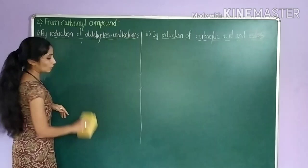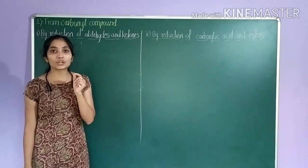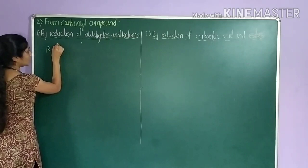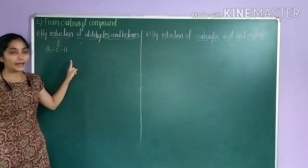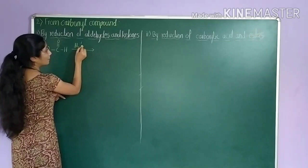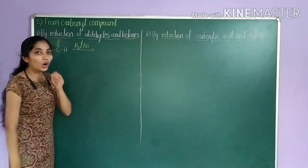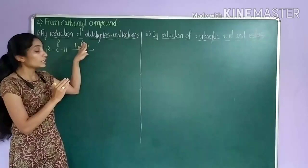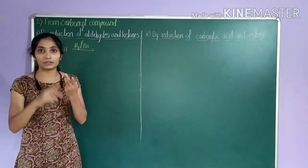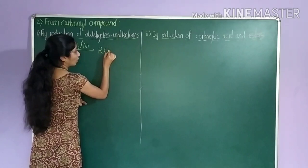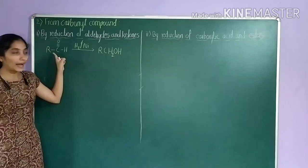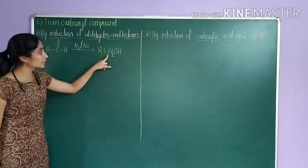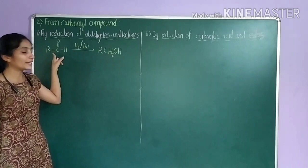Preparation of alcohols by reduction of aldehydes or ketones. Let us take a general example for aldehyde: R–C(=O)–H. If you treat aldehyde with H2 in presence of finely divided platinum, palladium, or nickel catalyst, you get the corresponding primary alcohol, RCH2OH. This method of preparation of alcohol from aldehyde is called catalytic hydrogenation.